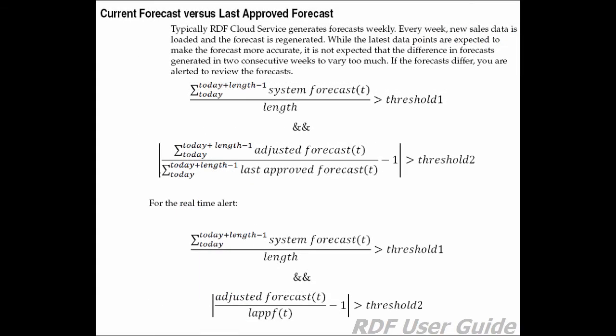One would expect them to be similar, but if not, this alert notifies you of the discrepancy that needs attention. Next is the current forecast versus last approved forecast alert. This alert compares previous forecasts to the most recently generated forecast. One would expect these forecasts to be similar from week to week; if not, this alert notifies you that the item forecasts need attention.